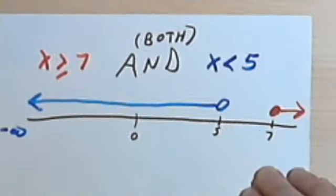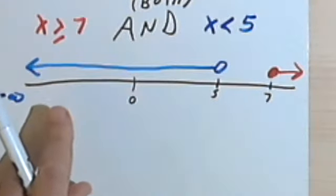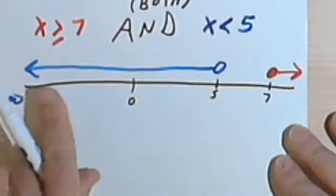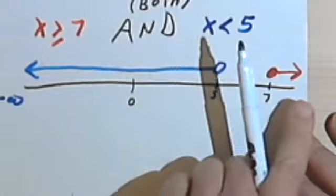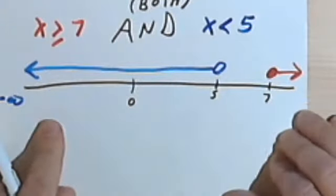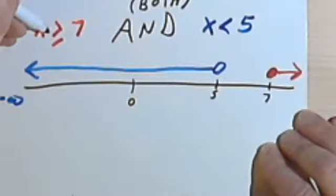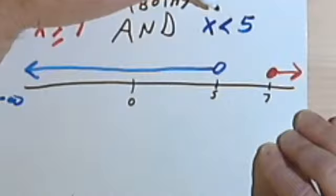And remember that AND means I've got to have both of these conditions. In other words, I've got to find places on the number line where I've got both blue line and red line. Now if you look, there are no places. And it makes sense that there are no places, because there are no numbers which are greater than 7 and also less than 5.